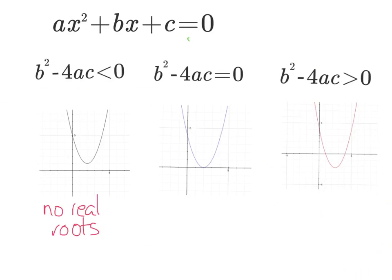Okay, this one, this graph in the middle, you can see it crosses the x-axis once. So when b squared minus 4ac is equal to zero, there is one real root.